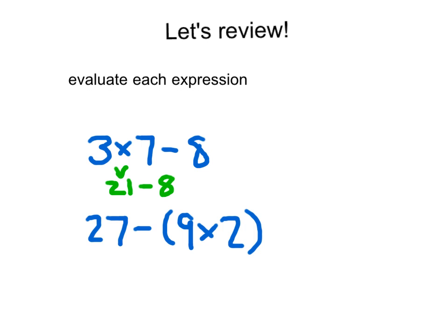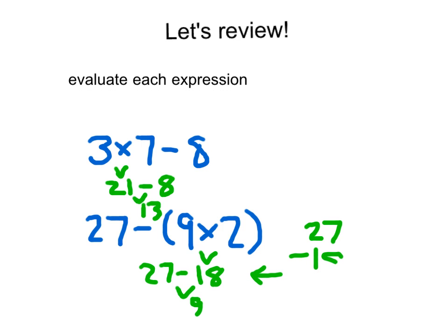Hopefully you hit pause. As you can see, I've evaluated both of these expressions down and simplified them to a single number. Now, if you couldn't do 27 minus 18 in your head, you can always write them up and down if you need to: the 2 becomes a 1, 17, 17 minus 8 is 9, 1 minus 1 is 0.